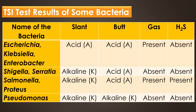This slide shows TSI test results of some bacteria. Escherichia, Klebsiella, and Enterobacter show acid slant, acid butt, gas present, and H2S absent. Shigella shows alkaline slant, acid butt, gas present, and H2S absent. Salmonella and Proteus show alkaline slant, acid butt, gas present, and H2S present. Pseudomonas shows alkaline slant, alkaline butt, gas absent, and H2S absent.